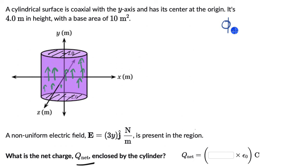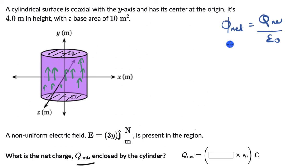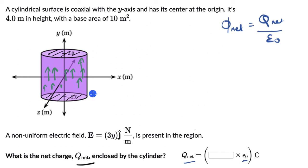Gauss's Law states that the net flux Φ_net equals the enclosed charge q_net divided by ε₀. So we need to figure out the net flux through the cylindrical surface, then multiply by ε₀ to get q_net.